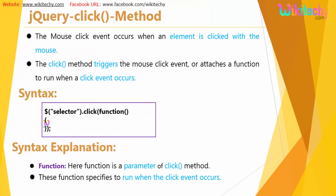For jQuery, here is the syntax. You should have a selector — that is nothing but an HTML tag — dot click of function, and you will be having a bracket. The click method triggers the mouse click event, or attaches a function to run when a click event occurs.